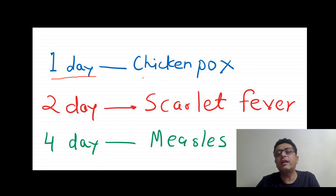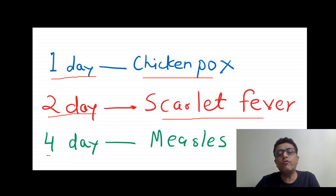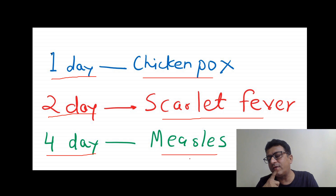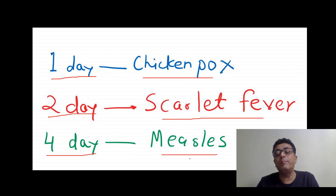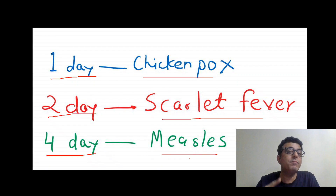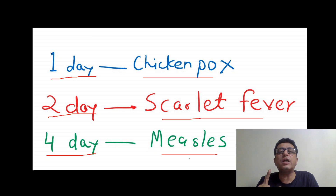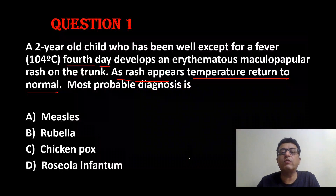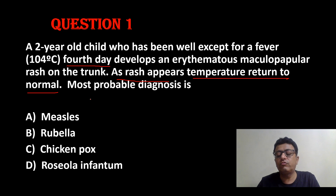We need to know on which day of fever the rash appears for each disease. In chickenpox, rash appears on the first day of fever. In scarlet fever, rash appears on the second day. In measles, rash appears on the fourth day. In measles, the classical history: child has running nose and cough, slight fever, then on the third or fourth day the rash appears and as the rash appears, fever shoots up to 100–103°F. In our question, as rash appears, temperature returns to normal — so it cannot be measles.